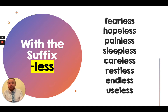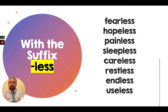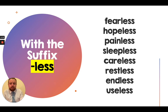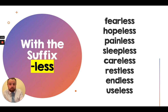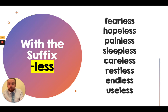'Endless' — without end, so this spelling lesson is endless — it never ends, it's without an ending. And finally, 'useless' — if something is useless, it's without use; there's no use for it. So those are our words this week, and they all have the suffix 'less' at the end, which means 'without.'